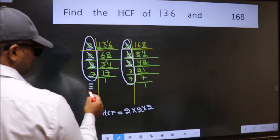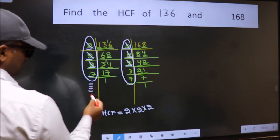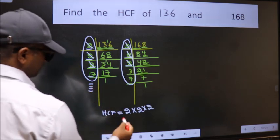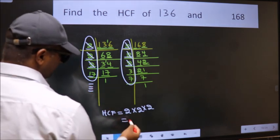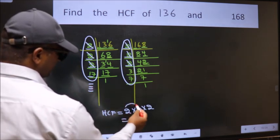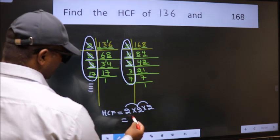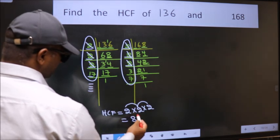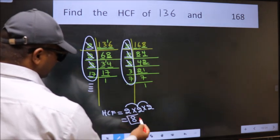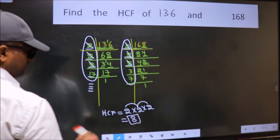No more numbers are common. So our HCF is 2 × 2 × 2 = 4 × 2 = 8. Therefore, the HCF of 136 and 168 is 8.